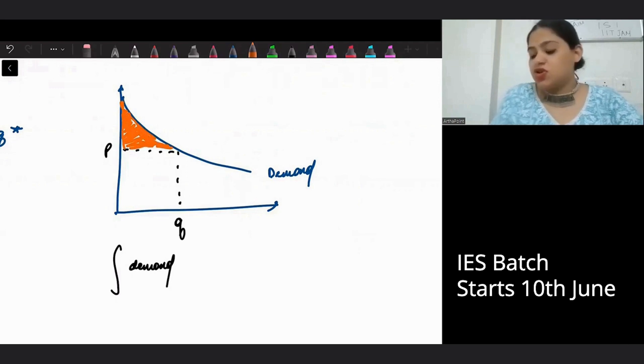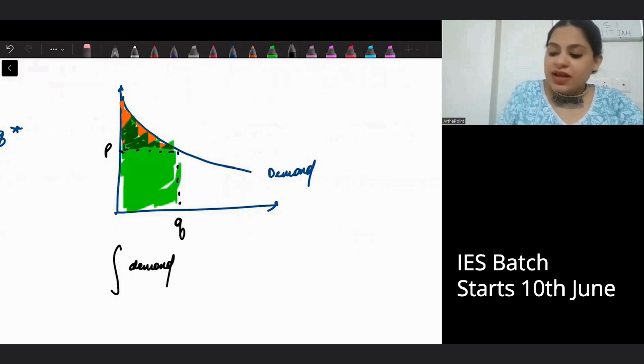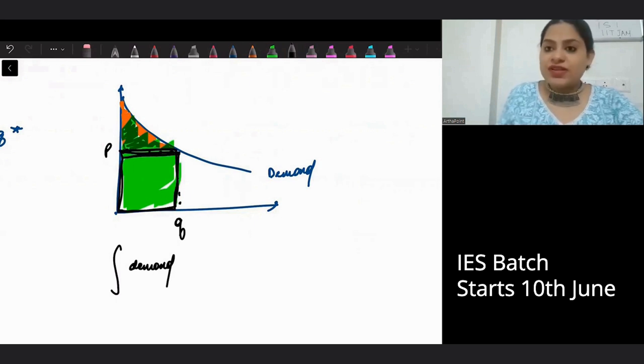And how can I get this much? When I integrate, I have got all this entire area. If I subtract the area of this square, that means how do I find this area? Rectangle or square? Length into breadth. So minus PQ.